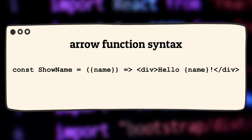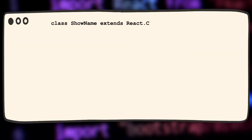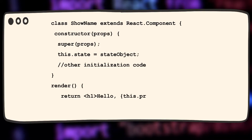Now let's have a look at the class-based component for the very same code. It will look somewhat like this. You have a class which you have to extend from React.Component, which is the parent class provided by React itself. Then generally you have the render method, but most of the time you also have a constructor which initializes various things and some state to manage. So all those things fall under the constructor method.